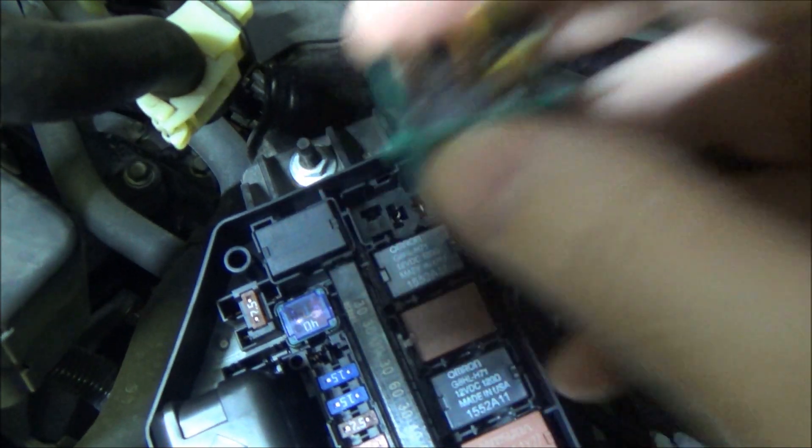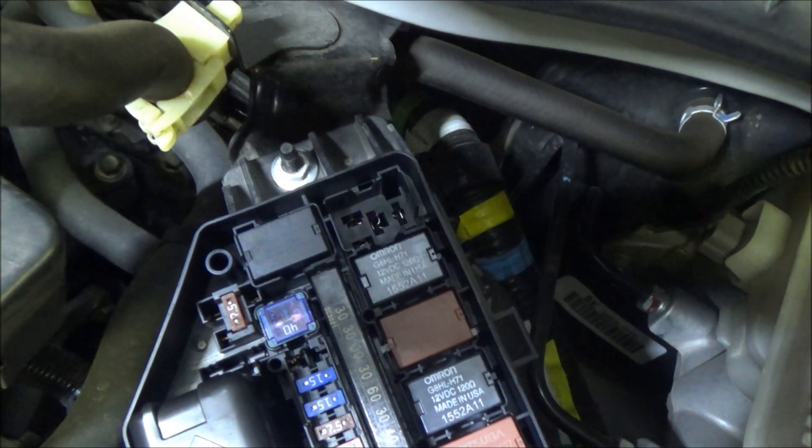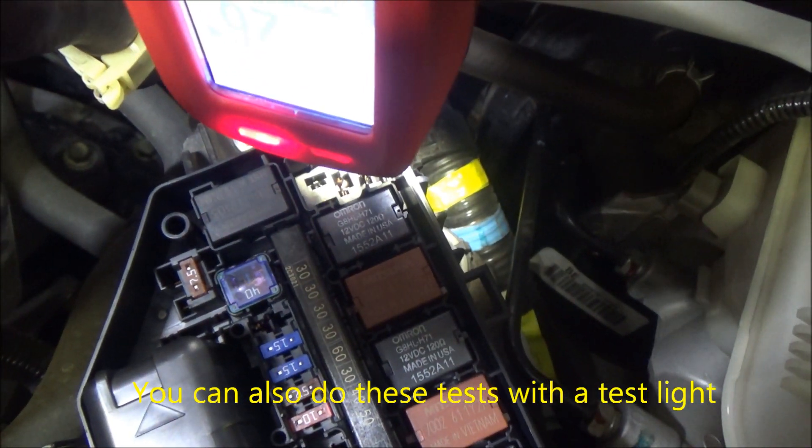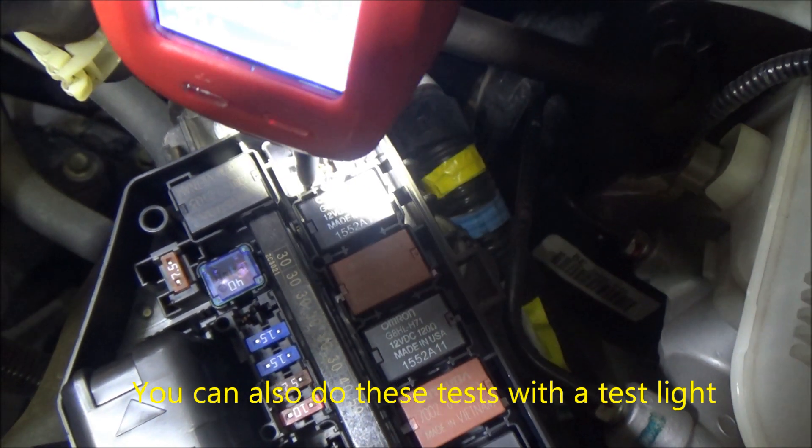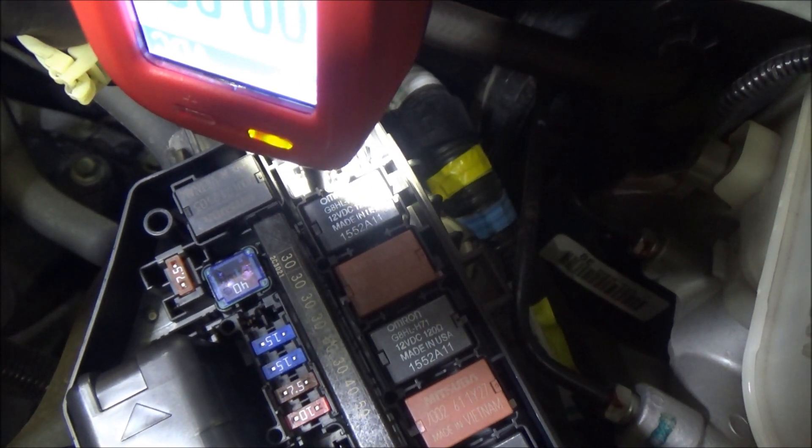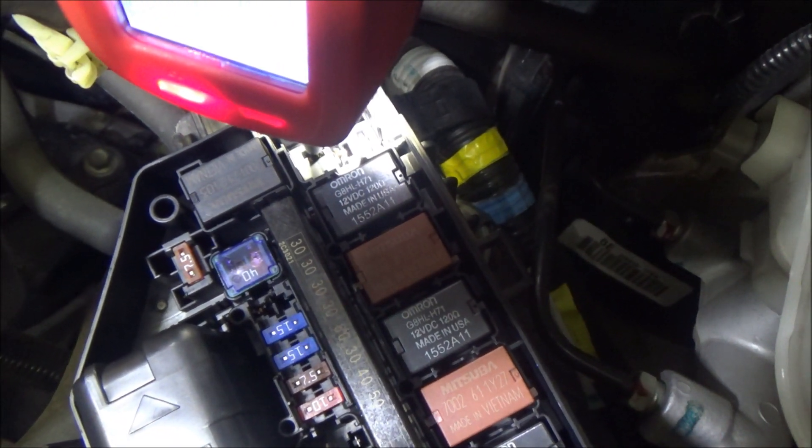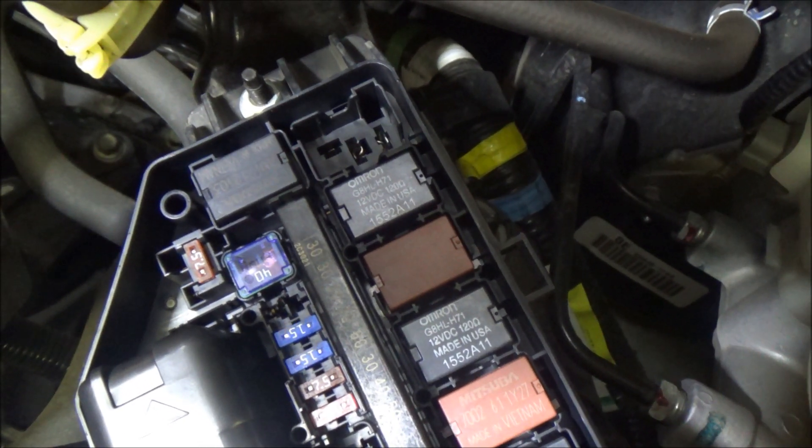I'm going to do this test with my power probe. With the key on, I should have power right here—you can see I do. I should have nothing right here, and then I should have ground over here, and then I should have power right here. So you can see I've got my power and got my ground, so I know this circuit is good. Now we just need to test the relay.